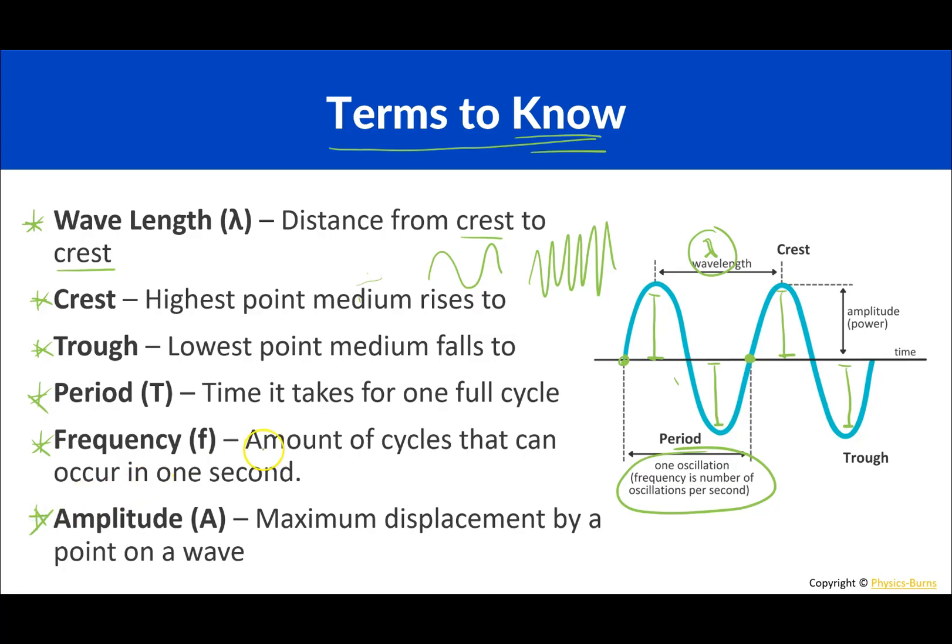So amplitude is the maximum displacement by a point on the wave. Like where the crests and the troughs are. That's what the amplitude is. The kind of the highest point. It's the power. That's what the amplitude is.